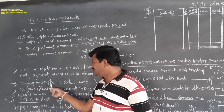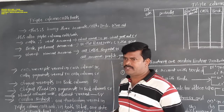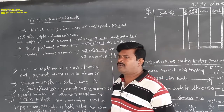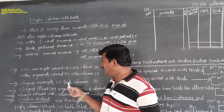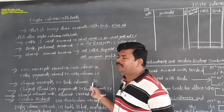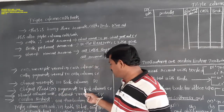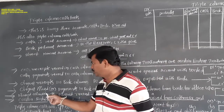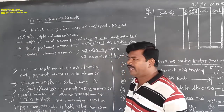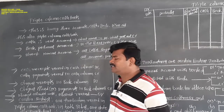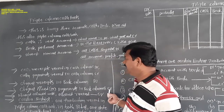Second, cheque receipts go in the bank column debit side. Any cheque received — through sale of assets, sale of goods, income received in the form of cheque, whatever it may be — must be recorded on the debit side in the bank column. Cheques issued or payments made by cheque, any expenses through cheque, purchases through cheque — it must be in the bank column credit side.